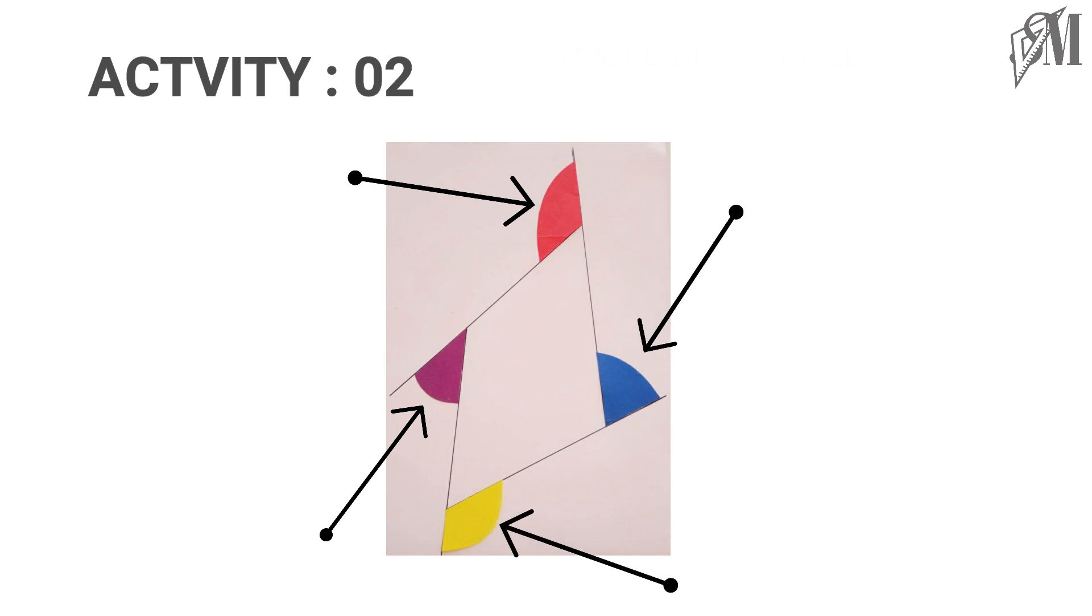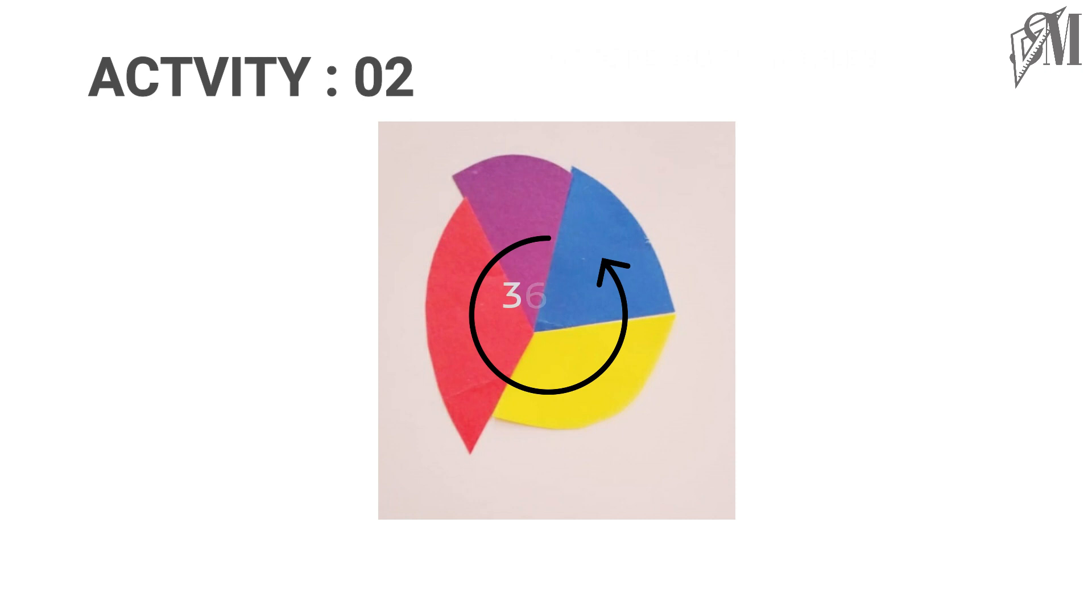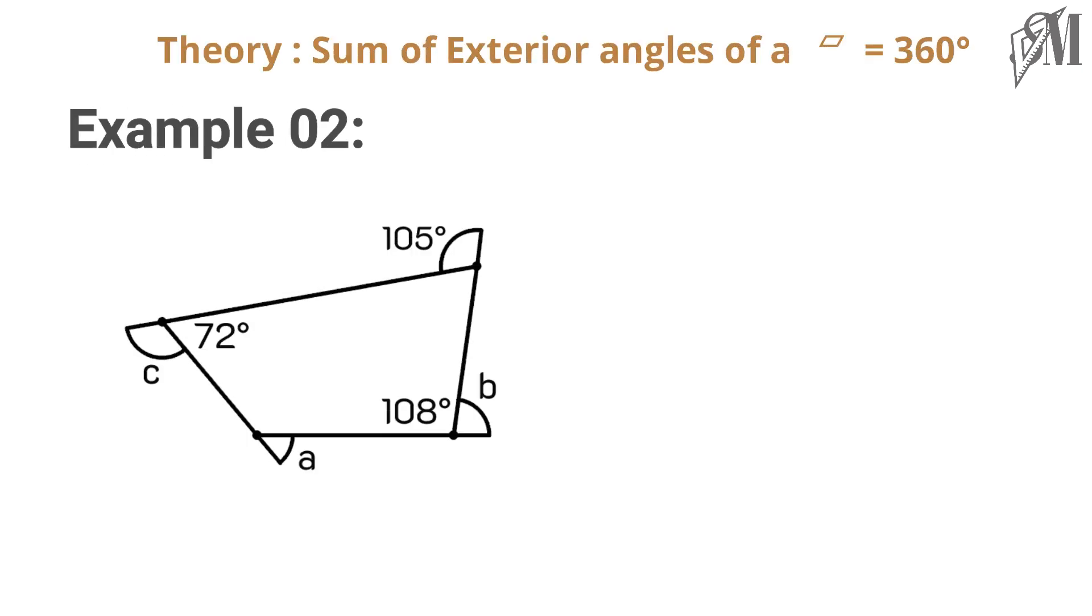Next, take these angles and arrange closer to one another. Ah, they beautifully arranged around a point, showing us they sum up to 360 degrees. Let's look into a question related to this. Now here, b plus 108 is equal...